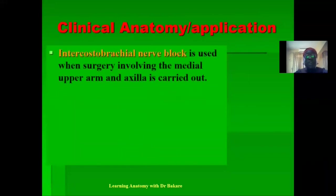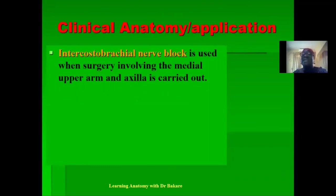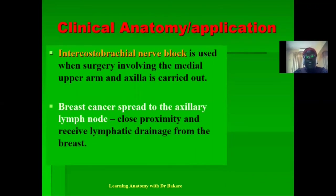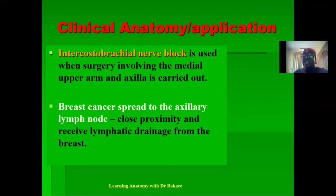For clinical applications: the intercostal brachial nerve can be used for nerve block during surgery around the arm or axilla region for local anesthesia. Also, the spread of breast cancer can extend to the axilla because the axillary lymph nodes also receive lymph drainage from the breast region.